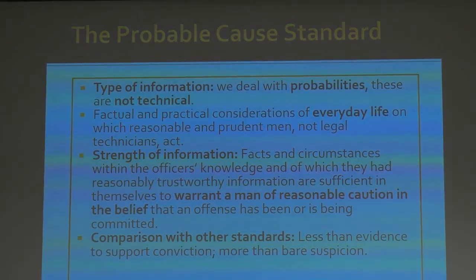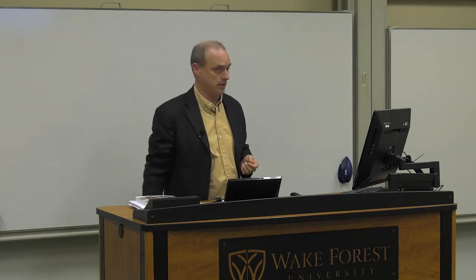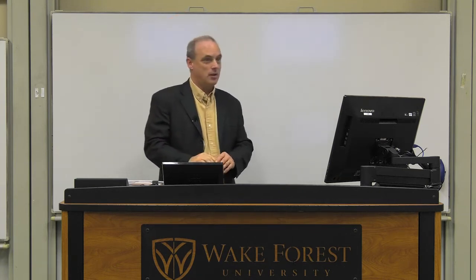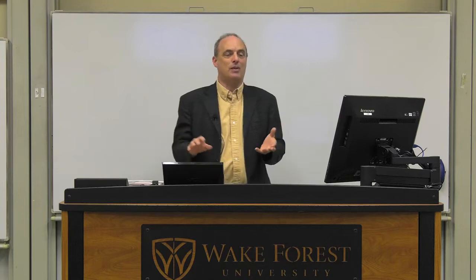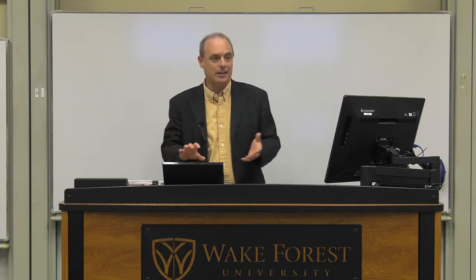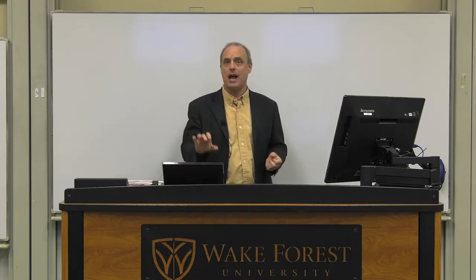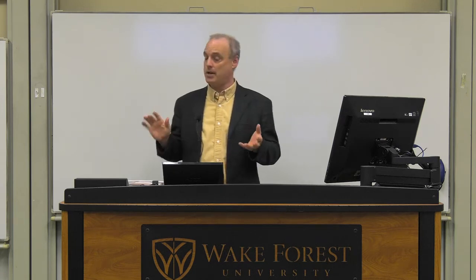The court also makes an interesting comparison and says they're not going to put a probability number on it — not 30%, 50%, or 70%. But they say it's something less than the beyond-a-reasonable-doubt standard used at trial, which is close to certainty — maybe around 95%. Something less than that can be probable cause, and it's got to be something more than mere suspicion. So it might be somewhere between 30 and 55% likelihood — people debate this — but it's some level of certainty more than reasonable suspicion but less than beyond a reasonable doubt.